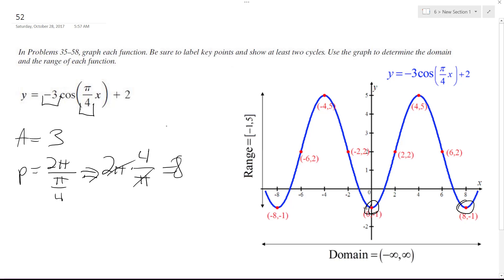Since it's negative 3, it reciprocates the cosine, so instead of starting up at 5 like it normally would, it starts down at negative 1. And it's got a domain from negative infinity to infinity. Alright, I hope that helps!